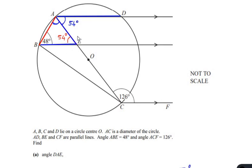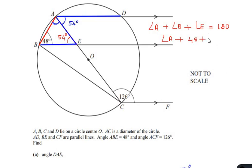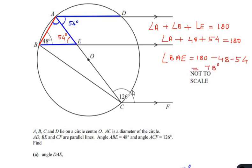Now that we have angle E, we can find angle BAE using the angle sum property of a triangle, where all angles add up to 180 degrees. Angle A plus angle B plus angle E equals 180 degrees. Angle B is 48 degrees and angle E is 54 degrees, so angle BAE equals 180 minus 48 minus 54, which gives us 78 degrees. Angle BAE is 78 degrees.